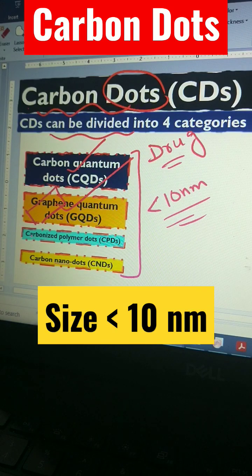The third type is called carbonized polymer dots. You see, dots are in all the names. The last one is carbon nano dots. So these are the four types.